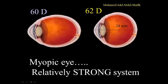Keep in mind that a myopic system is a relatively strong system. In case of axial myopia, this long eye does not need only 60, it needs less power. So 60 is relatively strong for this eye. While in case of refractive myopia, the actual power is higher than normal.